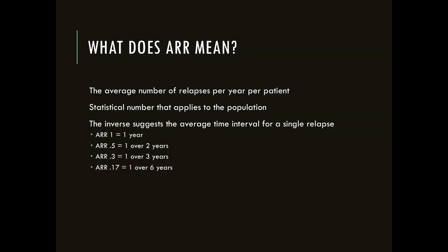An ARR of 1.0 means patients average one relapse per year; 0.5 means one every other year; 0.3 means one every three years; 0.17 means roughly one every six years. When you hear promotional programs on MS medications, the endpoint is generally the reduction in ARR. But this also means that in clinical trials, even treated patients are still having relapses.